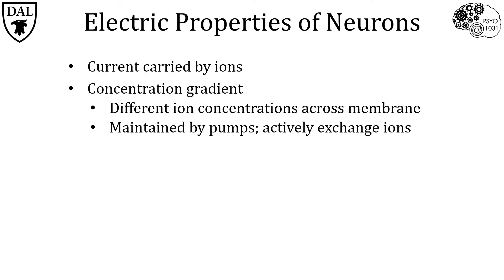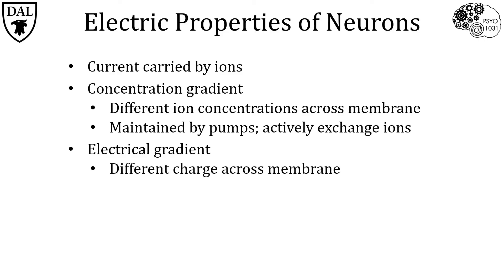Because of the different concentrations of ions, there is also an electrical gradient, which refers to the difference in charge across the neuronal membrane. If you stick an electrode into a typical neuron to measure the electrical properties at rest, when it's not active, you'd find that the inside is slightly more negative than the outside. This is called the resting potential, and in a typical neuron it is minus 70 millivolts.